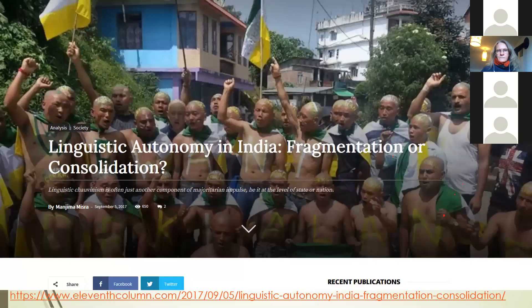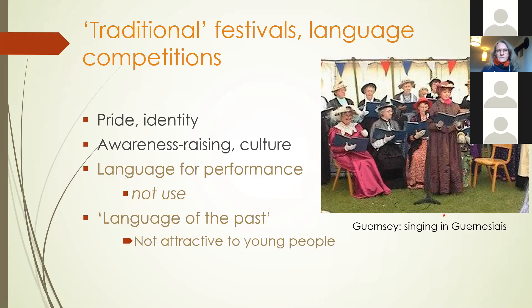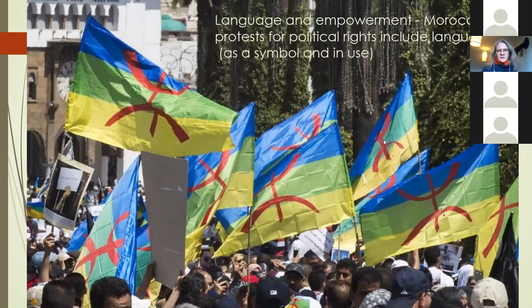Language as a source of empowerment is often thought of in political terms. Here we see a picture from Morocco where language rights and language as a symbol of community rights is very much a part of movements for political rights. The flag that the Amazigh peoples are using features a letter from the Amazigh alphabet, the Amazigh writing system, as a symbol of ethnic identity.